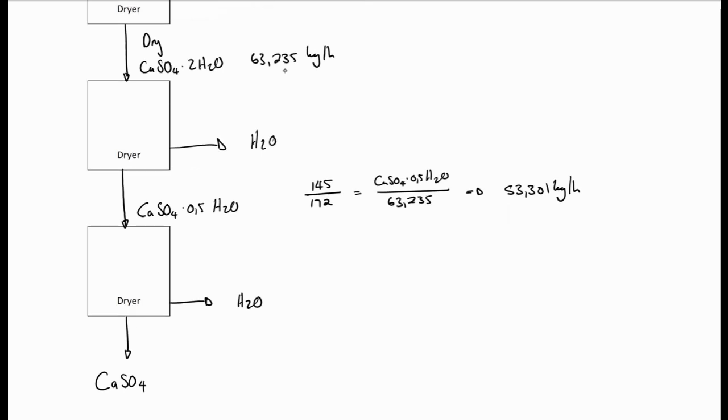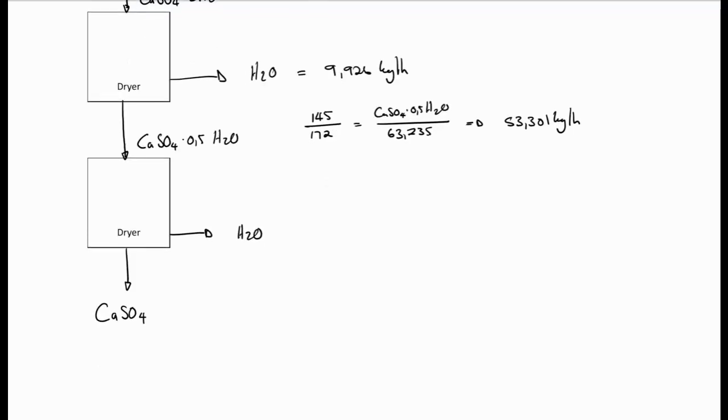Now, the amount of water leaving our dryer will be the difference between those two values, which will be equal to 9.926 kilograms per hour. Then we have the last dryer, where we have the calcium sulfate hemihydrate being dried to form anhydrous calcium sulfate and water.